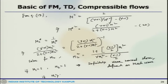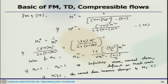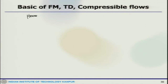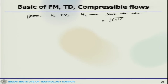If M₁ > 1, the normal shock becomes stronger and M₂ becomes less than 1. However, if M₁ tends to infinity, M₂ tends to a finite minimum value of √[(γ−1)/2γ], which comes out to approximately 0.378 for air. These are the different relationships one can obtain.